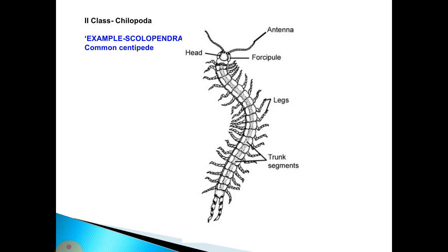An example of Chilopoda is Scolopendra, the common centipede. In the diagram of the centipede you can see the head, the legs, trunk segments, antennae, and the poison claw or forcipule.